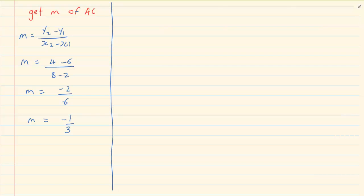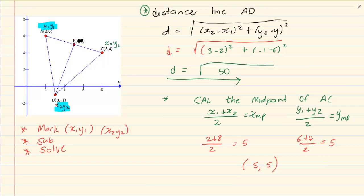And then they say calculate the gradient of BD. If you look at B, we have calculated B from here where they said calculate the midpoint of AC. AC was this line, so the midpoint is at B which is now 5 and 5. How do we calculate the gradient of BD? We know we have already marked D as x2, y2. So what we are going to do is mark this as x1, y1. Now we are going to substitute.